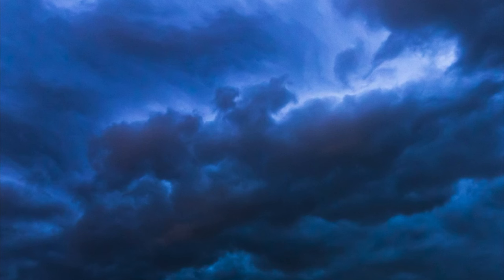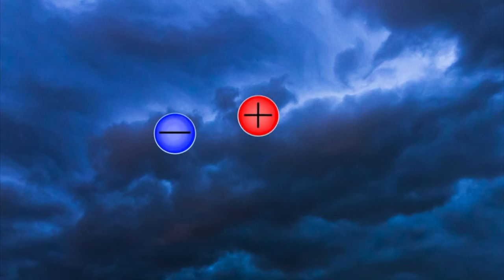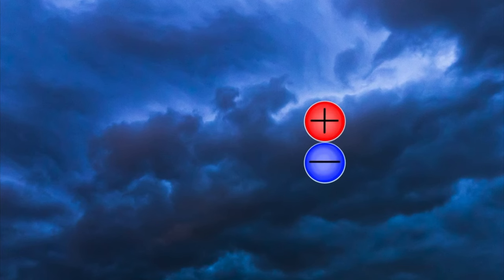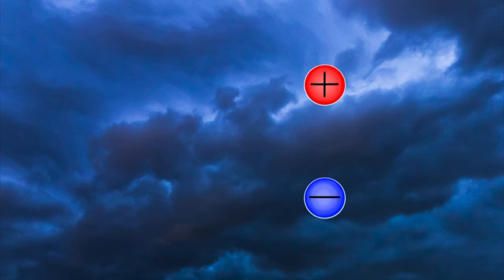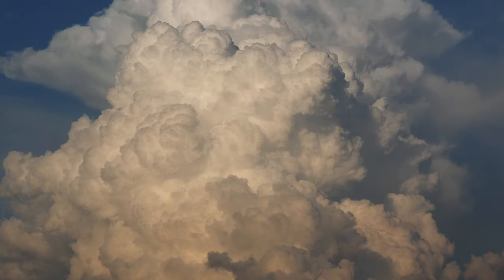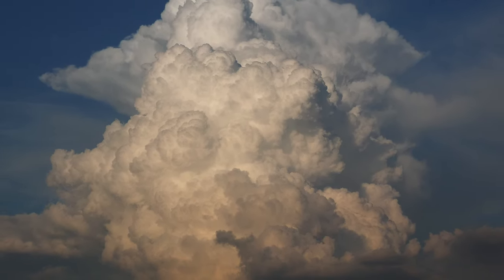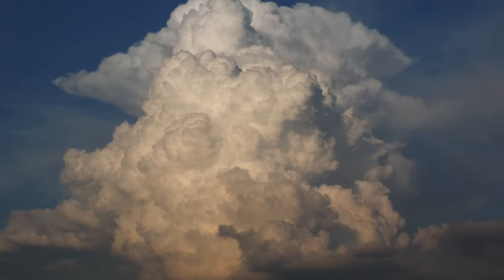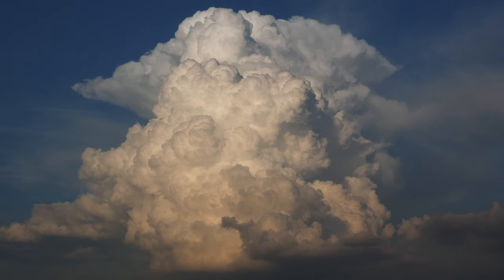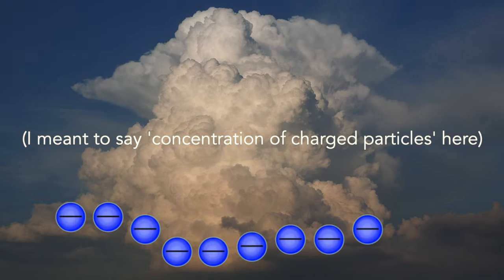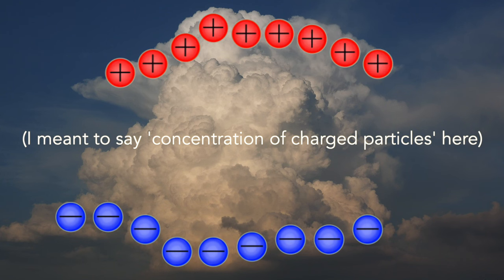Those that move downward tend to act like the balloon or the comb we saw earlier — they knock electrons off the upward moving pieces, giving themselves an overall negative charge. As the collisions continue, a charge imbalance is created across the entire thundercloud. Although the cloud is neutral overall, it now has a high negative charge at its base, as well as a high positive charge at the top.